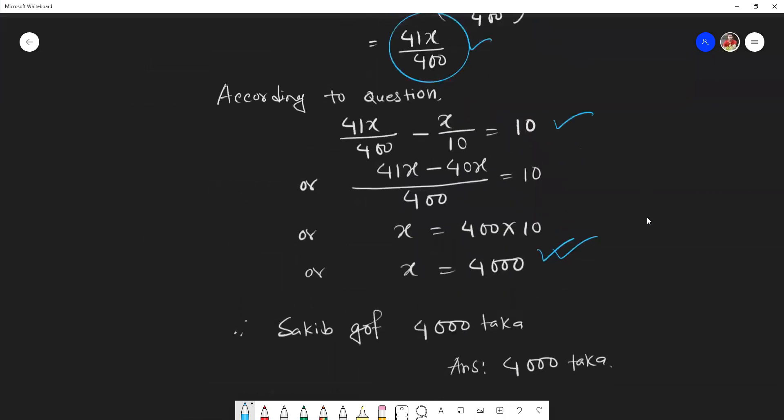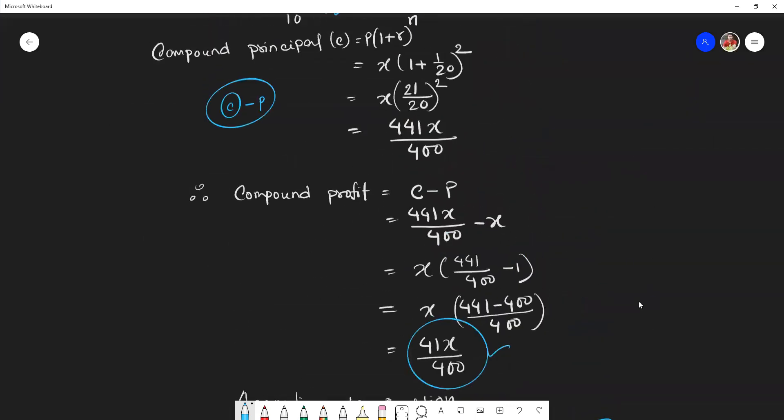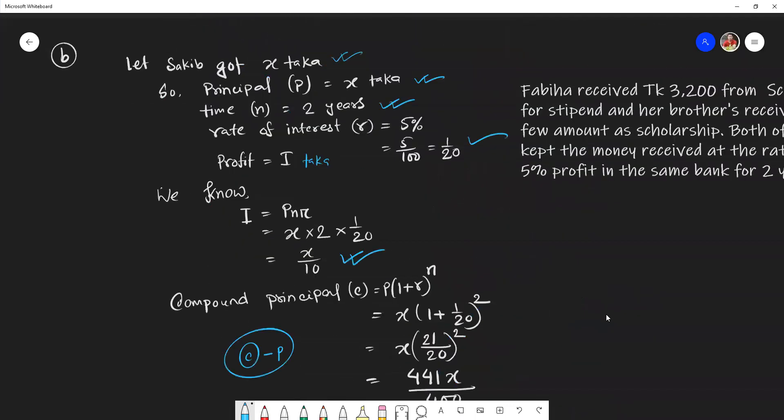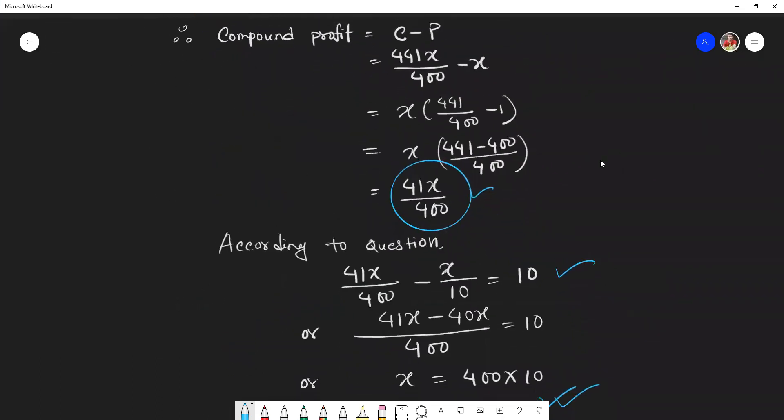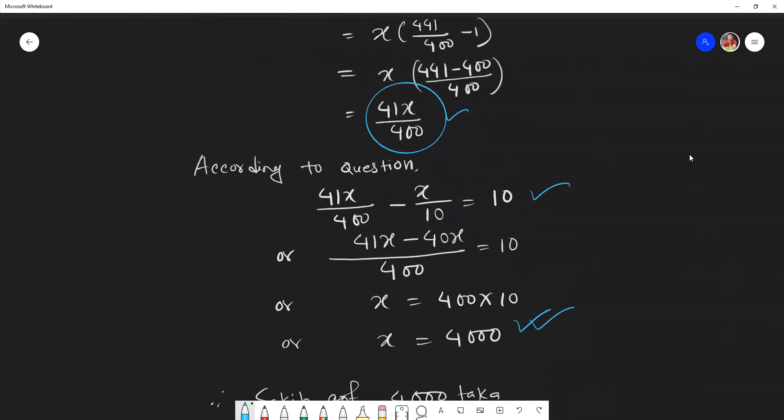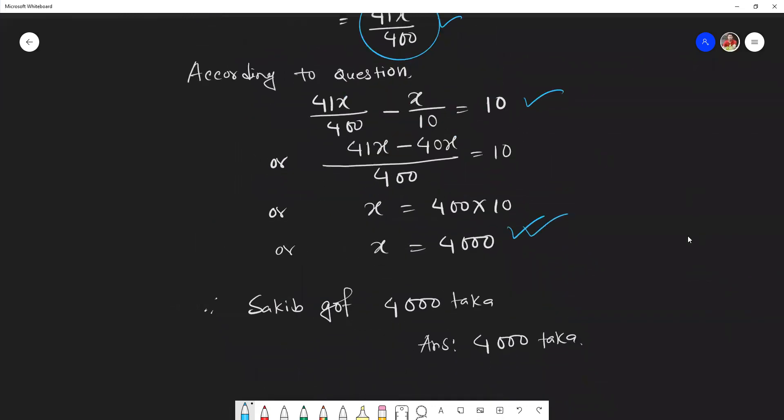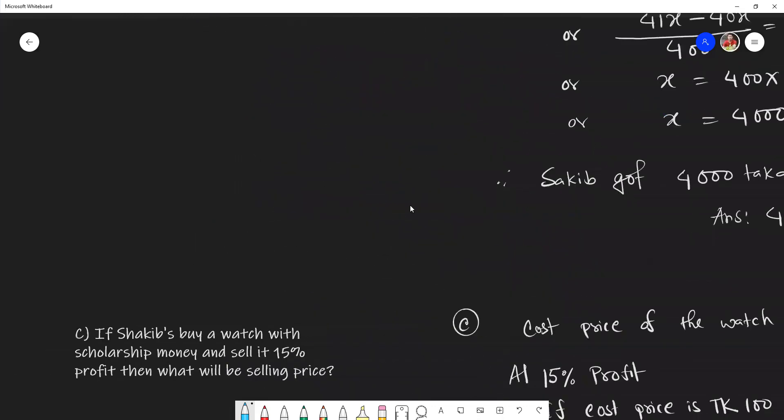That means Sakib got 4,000 taka as scholarship. You can take this screenshot. This is the second part and this is the answer.